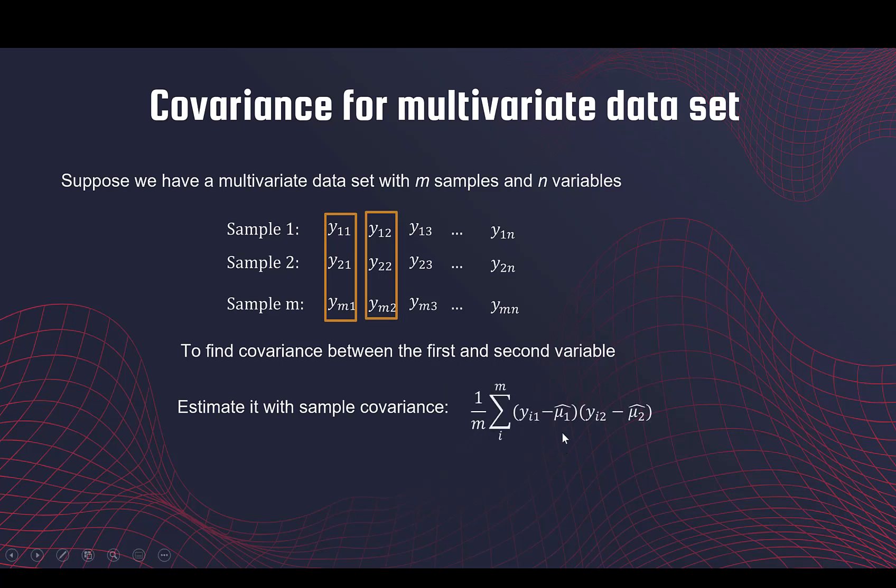This is the mean of the first variable, mean of the second variable, divided by the number of data points which is m. We could also do m minus one.